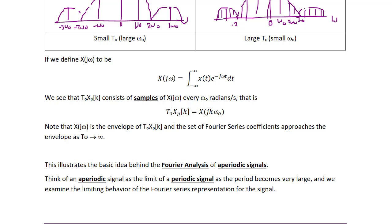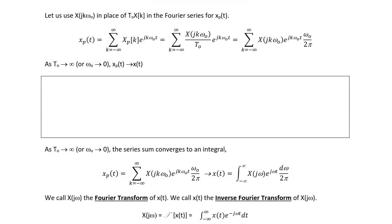Think of an aperiodic signal as the limit of a periodic signal as the period becomes very large. Using X(jkω₀) in place of t₀·x(k) in the Fourier series for xp(t), we get xp(t) equals the summation from k equals negative infinity to infinity of X(jkω₀) over t₀ times e^(jkω₀t), which can be rewritten as the summation of X(jkω₀) e^(jkω₀t) times ω₀ over 2π, since 1 over t₀ equals ω₀ over 2π.